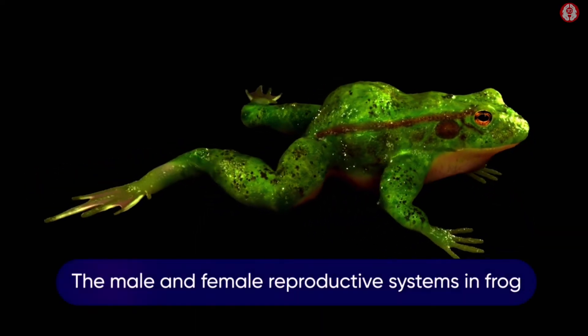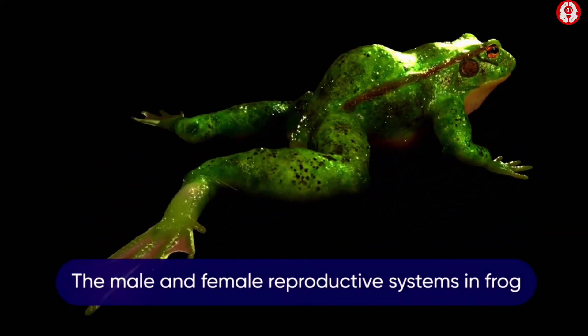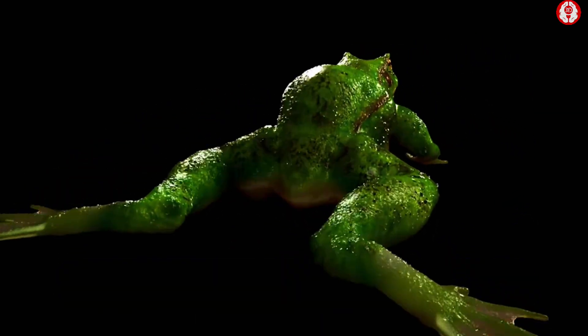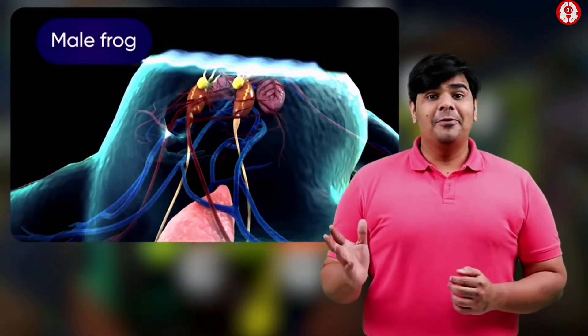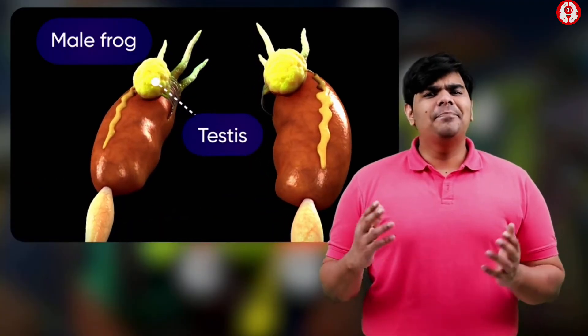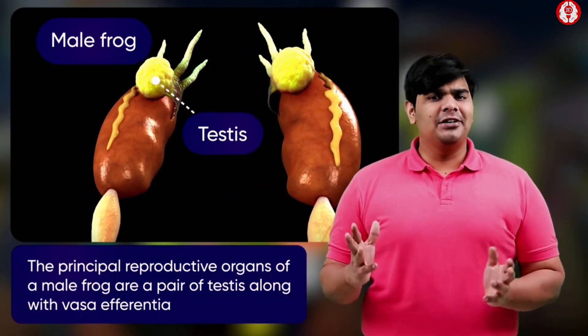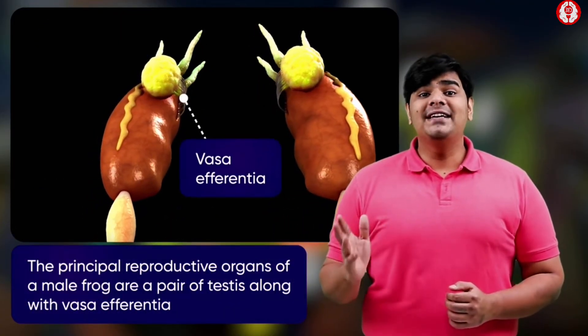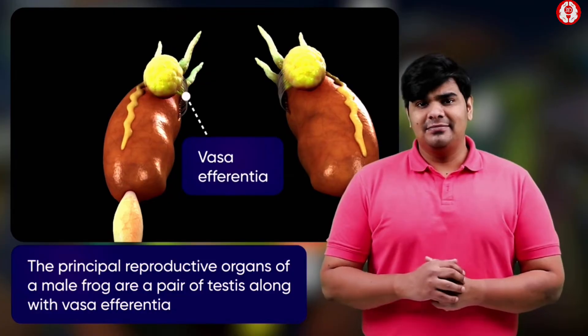In this topic, we will learn about the male and female reproductive systems in frogs. The male frog possesses a pair of testes as the principal reproductive organ and 10 to 12 vasa efferentia.